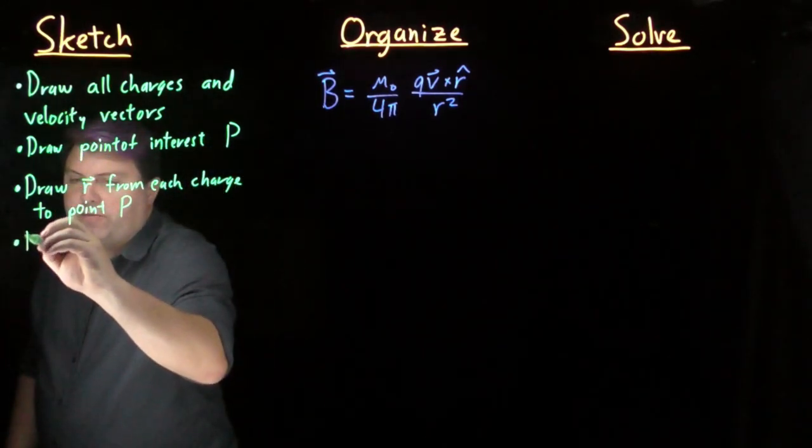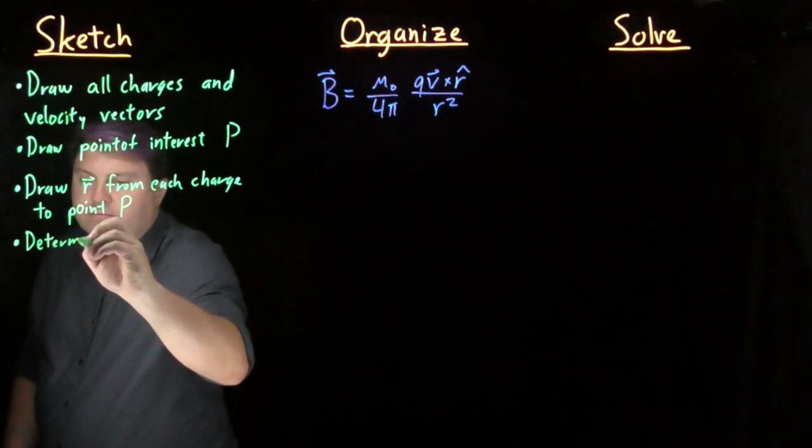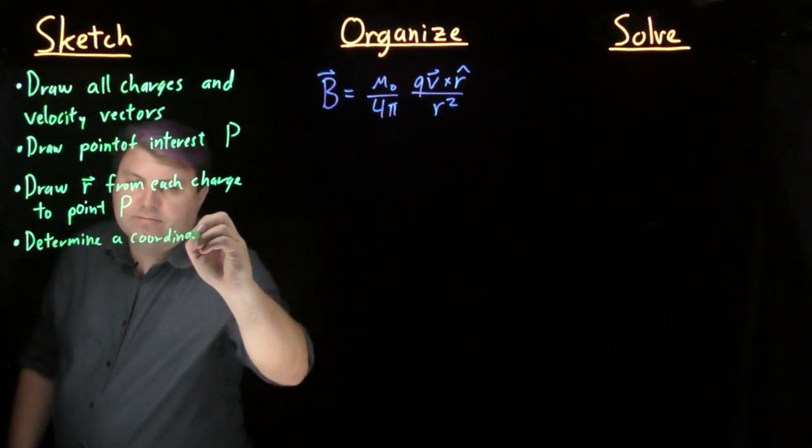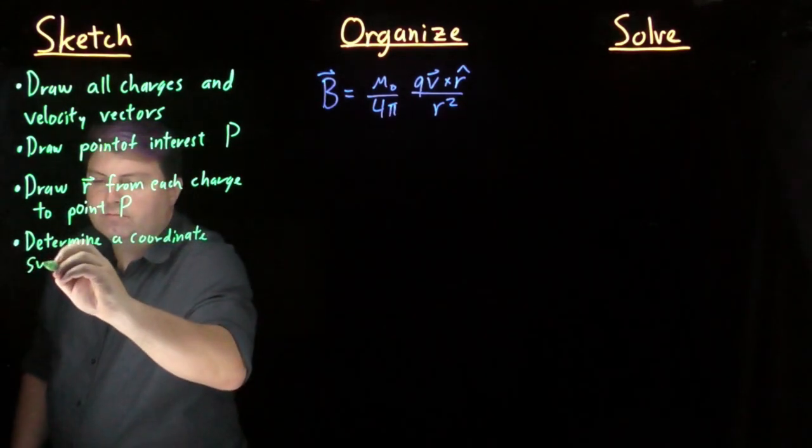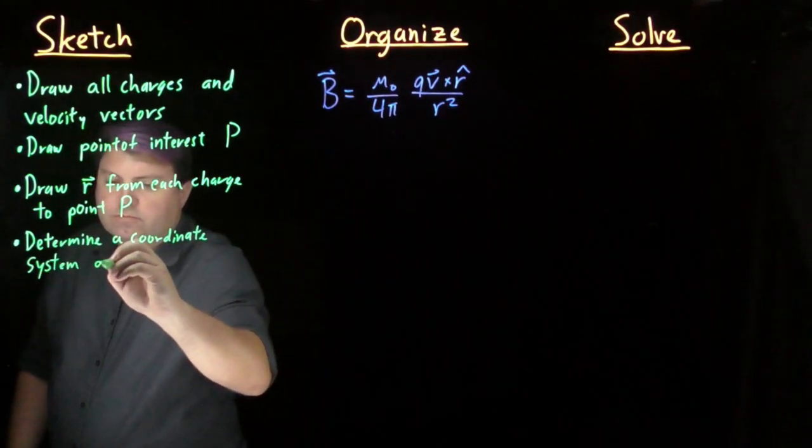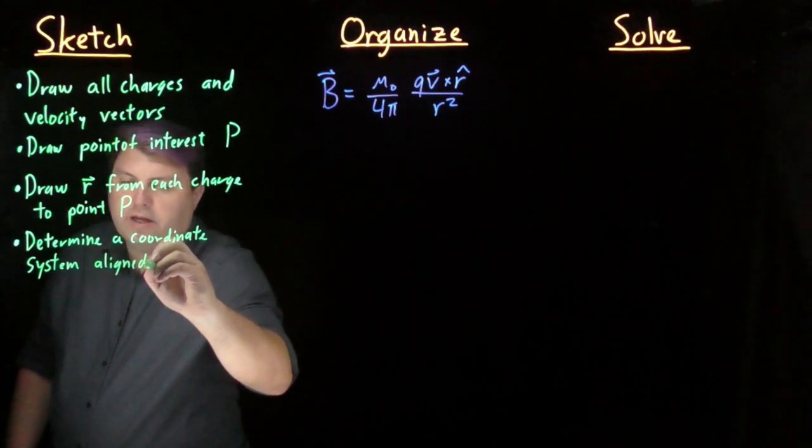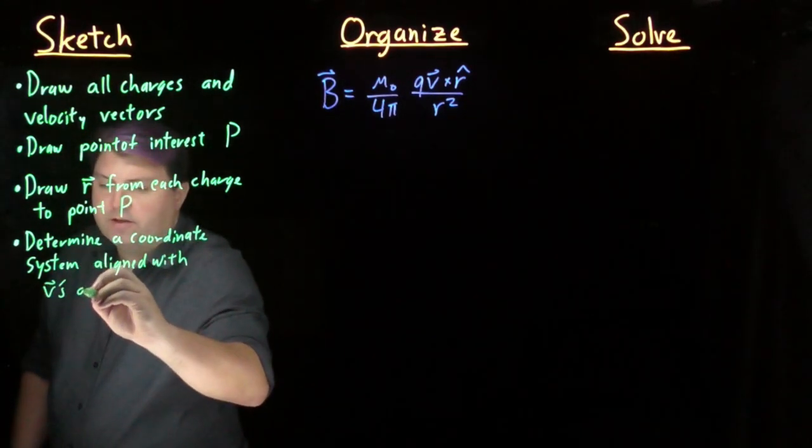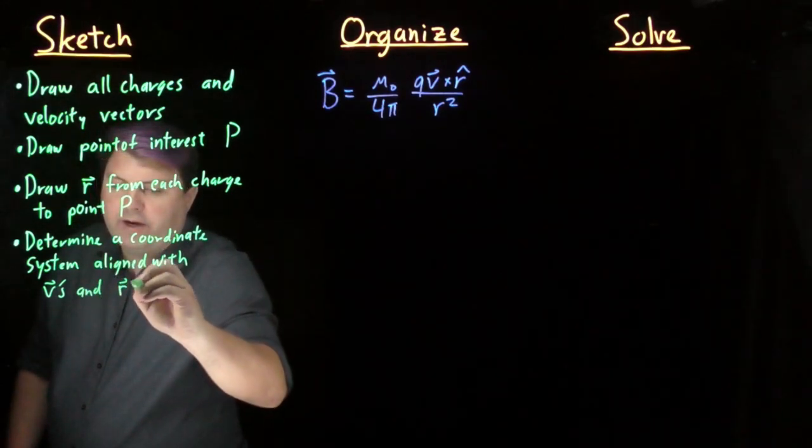In fact, we are going to continue this because we want to determine a coordinate system aligned with our velocity vectors and our radius vectors.